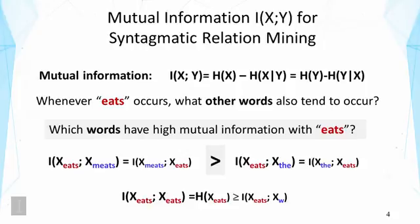Let's examine some intuition of using mutual information for syntagmatic relation mining. The question we ask is: whenever a word occurs, what other words also tend to occur? This question can be framed as a mutual information question — which words have high mutual information with a given word? We compute the mutual information between a word and other words, and words that are strongly associated will tend to have high mutual information, whereas unrelated words will have lower mutual information. For example, the mutual information between 'eats' and 'meat' — which equals that between 'meat' and 'eats' because mutual information is symmetric — is expected to be higher than the mutual information between 'eats' and 'the'.